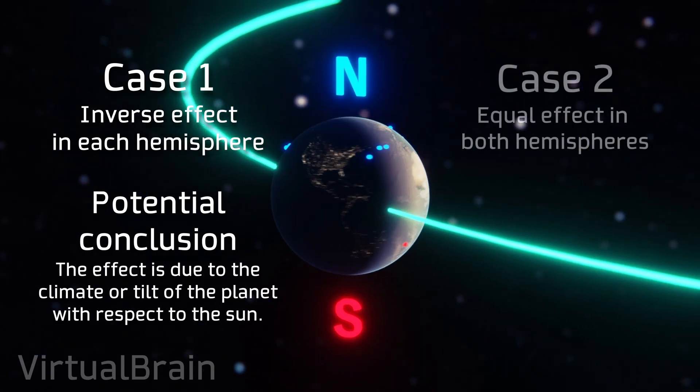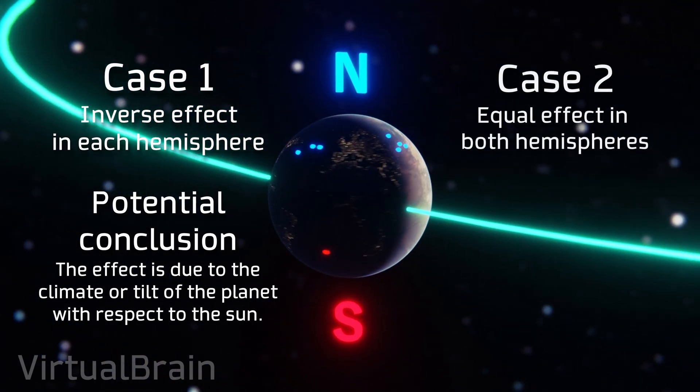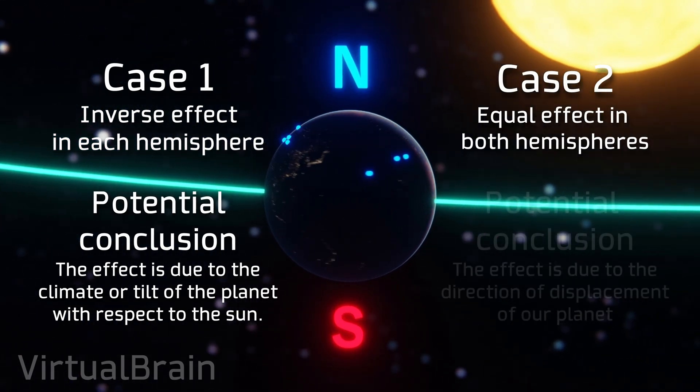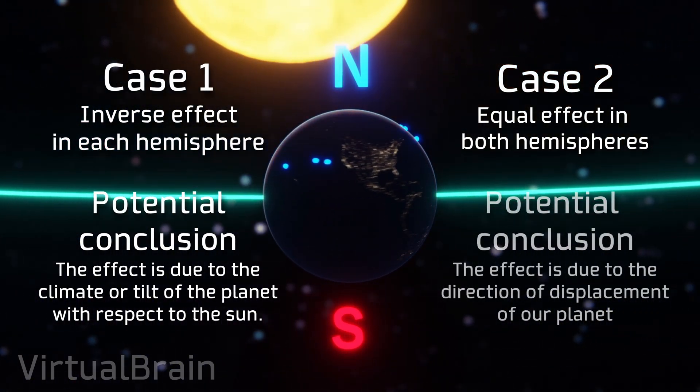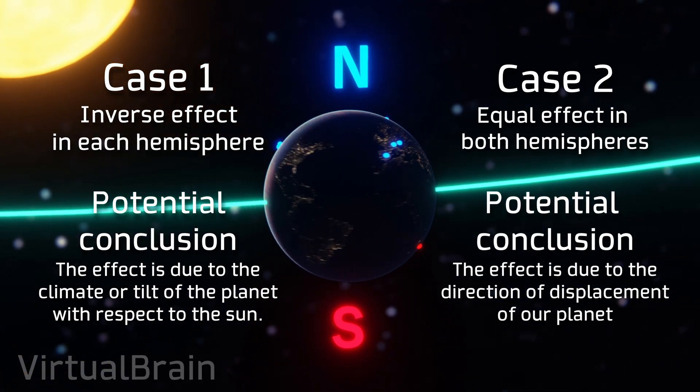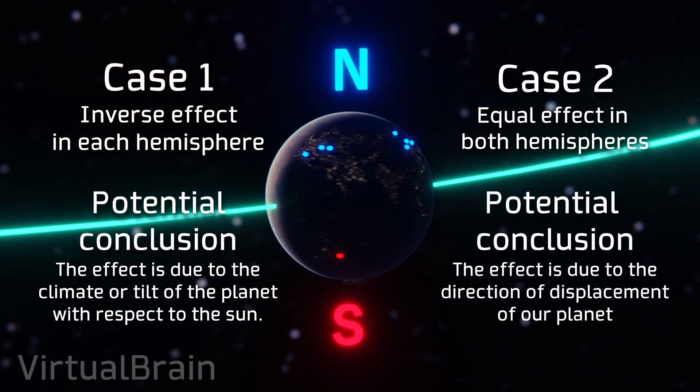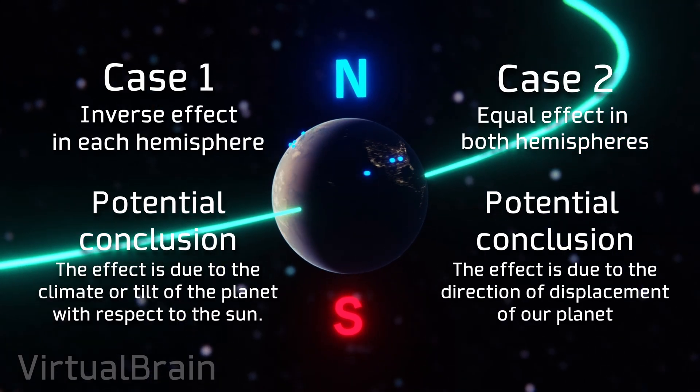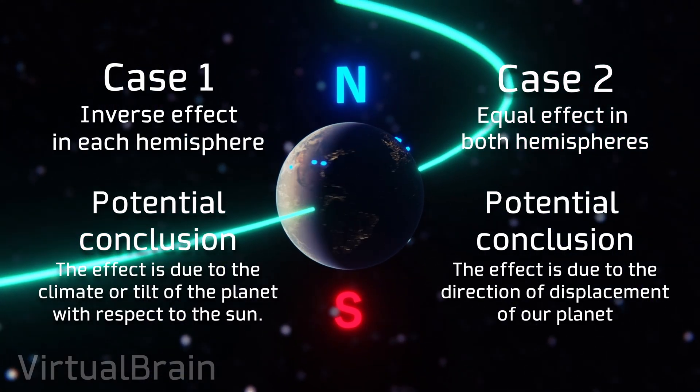Now, if both detectors follow the same cycle, that is, both increase and decrease their activity, then we could say with greater certainty that the changes are due to a phenomenon on a larger scale, because regardless of the position of the experiment on our planet the factor that would most influence the results would be the direction in which our planet moves within the solar system.